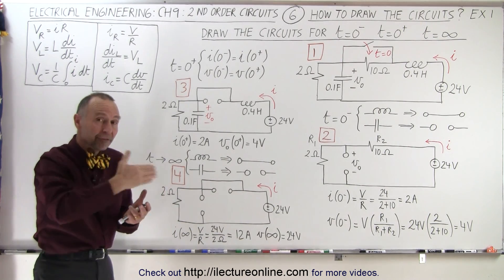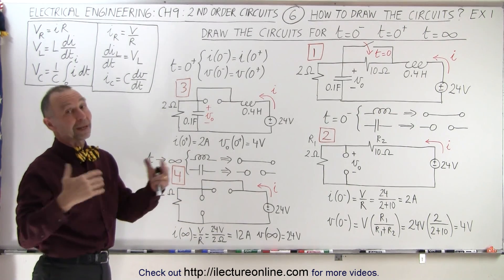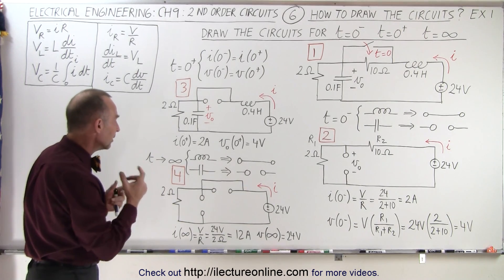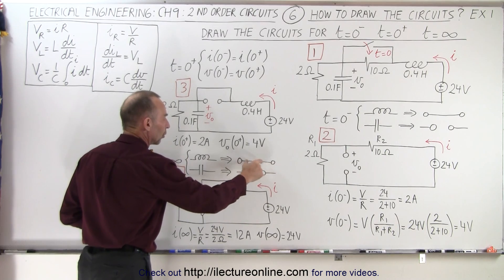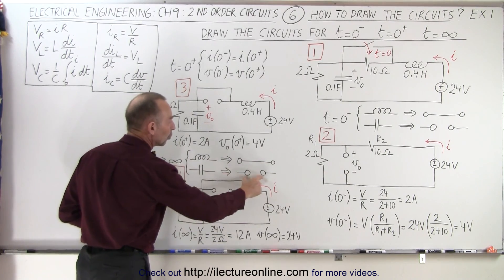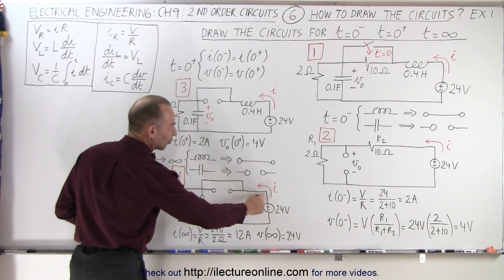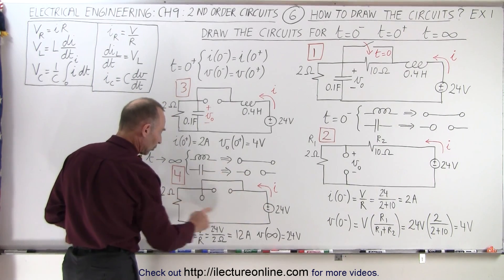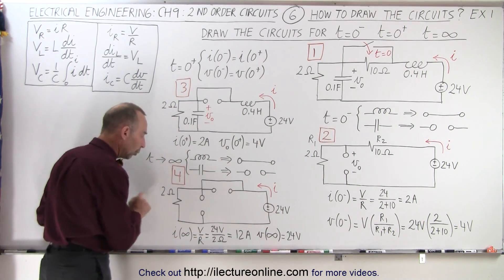And then finally, we allow enough time to go by. We say time approaches infinity. Of course, we don't wait infinite amount of time. We wait just enough time so the transient period is over. Now again, any inductor now changes to a short circuit. And any capacitor now changes to an open circuit. So the capacitor is now an open circuit. The inductor is now just a short circuit. And now we have a circuit with just one voltage supply, one source, and one resistor.